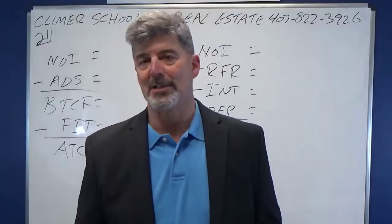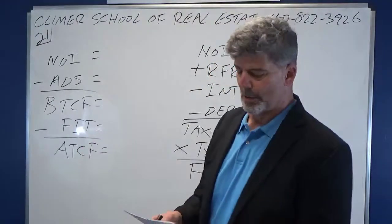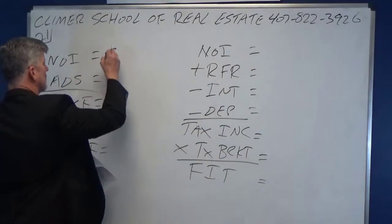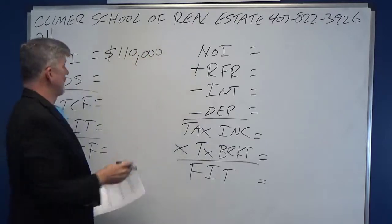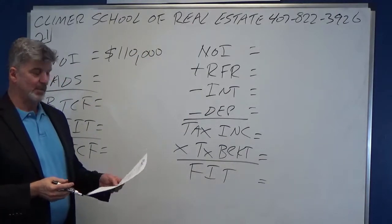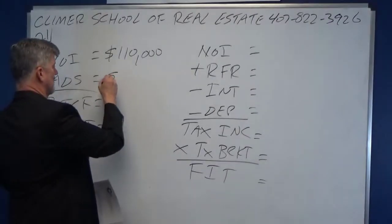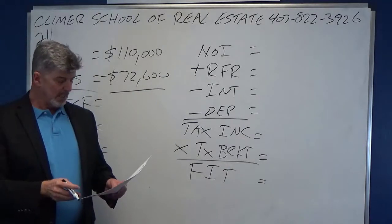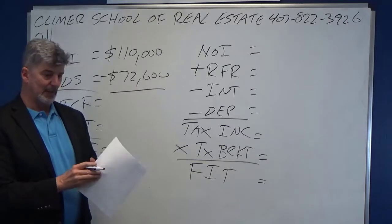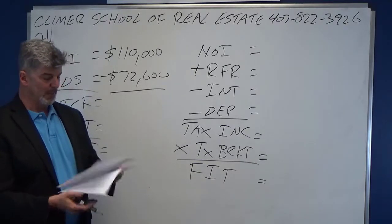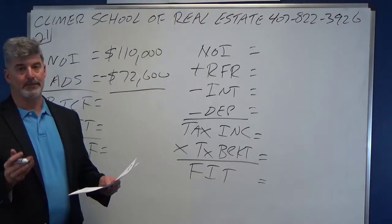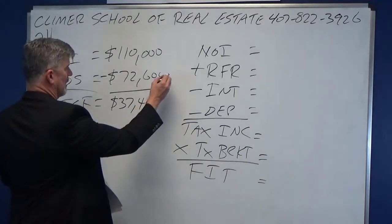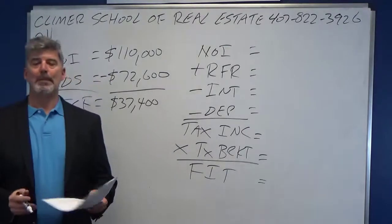All I'm going to do right now is just fill in the blank — it's kind of like an Excel spreadsheet, but it's on the board. According to the problem, NOI is $110,000. Annual debt service is $72,600. I'm going to subtract that, and it's going to give me before-tax cash flow of $37,400. So what do we do now? We've got to figure out what we're going to have to pay the IRS.